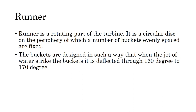The runner of a Pelton turbine is a rotating part that has a circular disk on the periphery of which a number of evenly spaced buckets are fixed. The buckets are made of two hemispherical cups joined together. Each bucket has a wall between the two hemispherical cups known as the splitter, which splits the jet of water that strikes the bucket into two equal parts, and the water jet exits from the outer edge of the bucket.